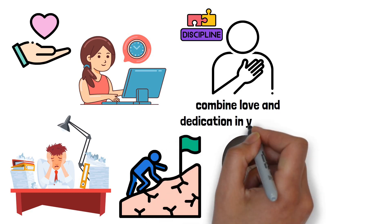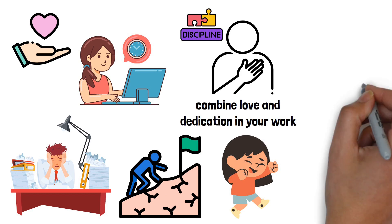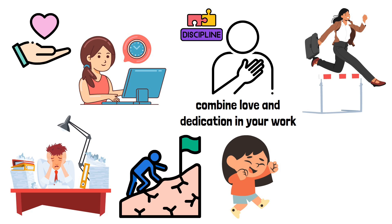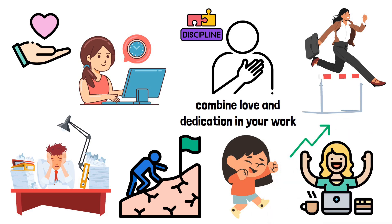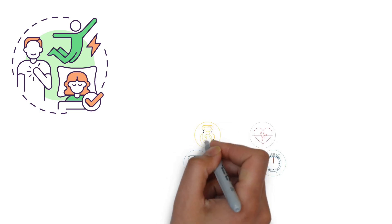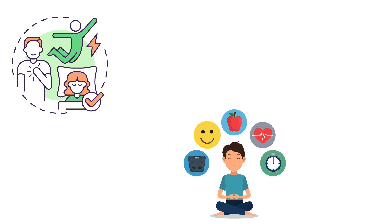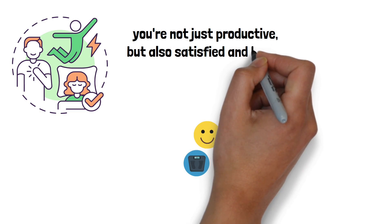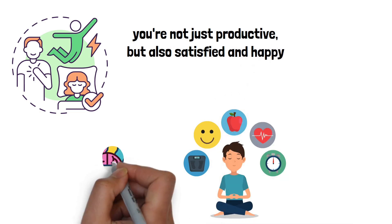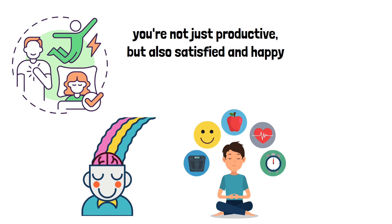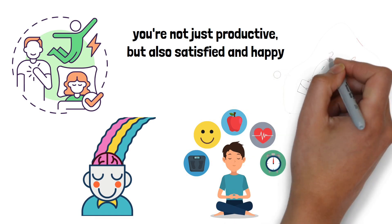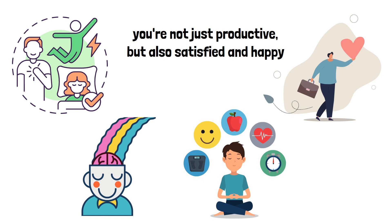When you combine love and dedication in your work, you create a powerful force. This combination helps you to overcome the internal barriers and resistance that everyone faces. It also allows you to keep growing and improving, to learn from your mistakes and failures, and to find joy in the process, not just the end results. Loving and dedicating yourself to your work also means taking care of yourself. It's recognizing that your physical, emotional, and mental well-being are all essential to your creative output. This holistic approach ensures that you're not just productive, but also satisfied and happy with what you do. In essence, love and dedication to work are about forming a deep, meaningful connection with what you do and committing to it fully. It's about seeing your work as a vital part of your life's journey, not just a way to achieve external success or recognition.